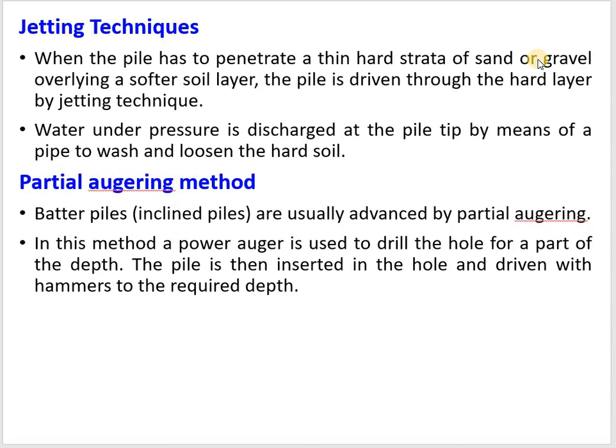The partial augering method is generally used for inclined piles and is rarely used. In this method, an auger is used to first drill a hole in the soil, creating a seating for the pile. Then a driving force — diesel hammer or steam hammer — is applied to drive the pile to the required depth. The type of pile driving method used influences the hammer blow efficiency and thus the capacity of the pile.